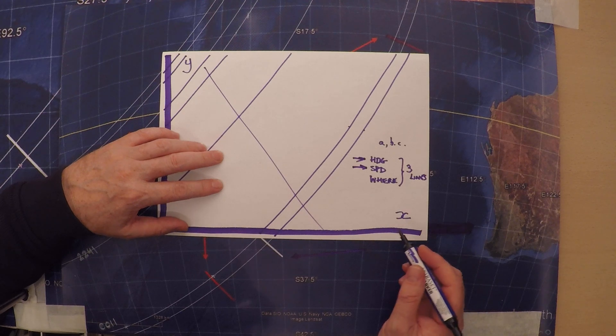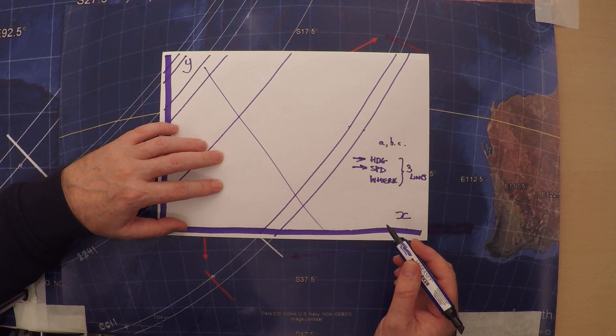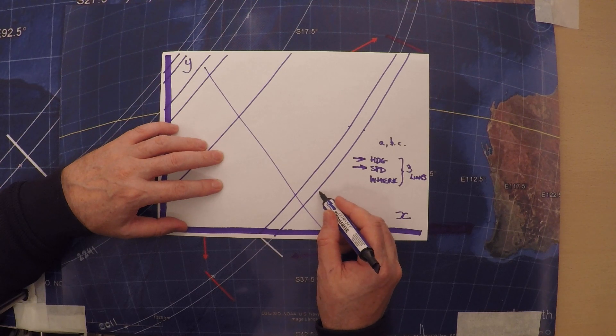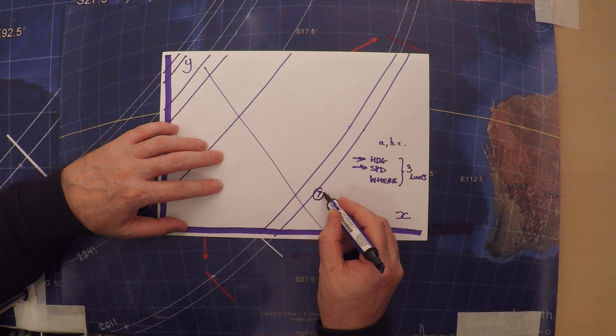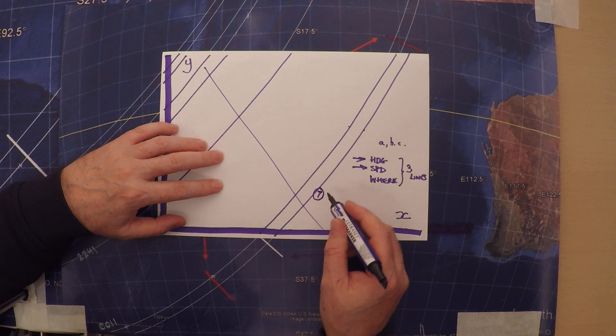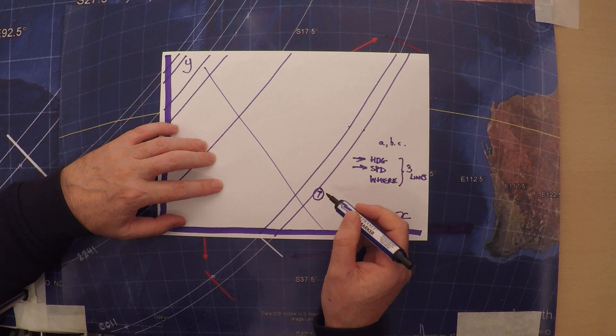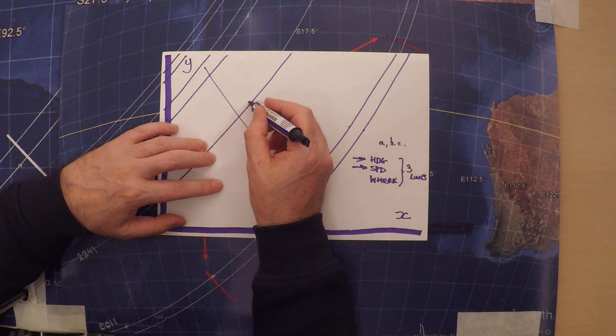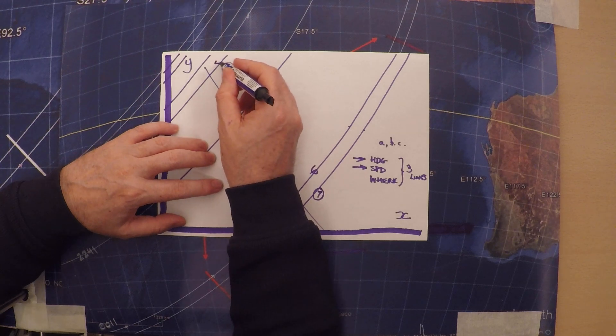So I'm going to choose the most reliable lines where I don't think any turns would be taking place. So the seventh arc is this one. Turns were probably taking place towards the end of the flight as it ran out of fuel. So I'm not going to use this one. I'm going to use the previous three, just six, five, and four.